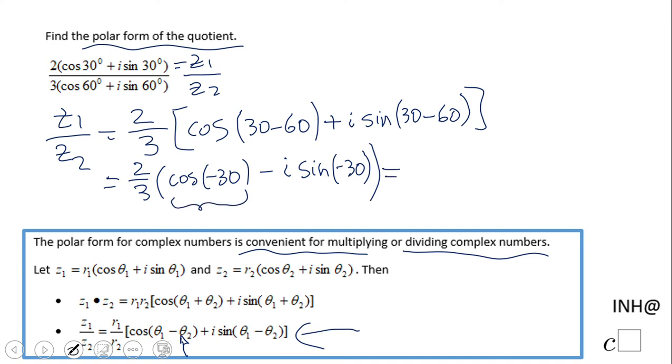Cosine is an even function, so we have two-thirds cosine of 30. And this is a plus—wait, this was a plus here. And sine on the other hand is an odd function, so I'm going to have a minus here, i sine of 30. This is the simplest form of this quotient.